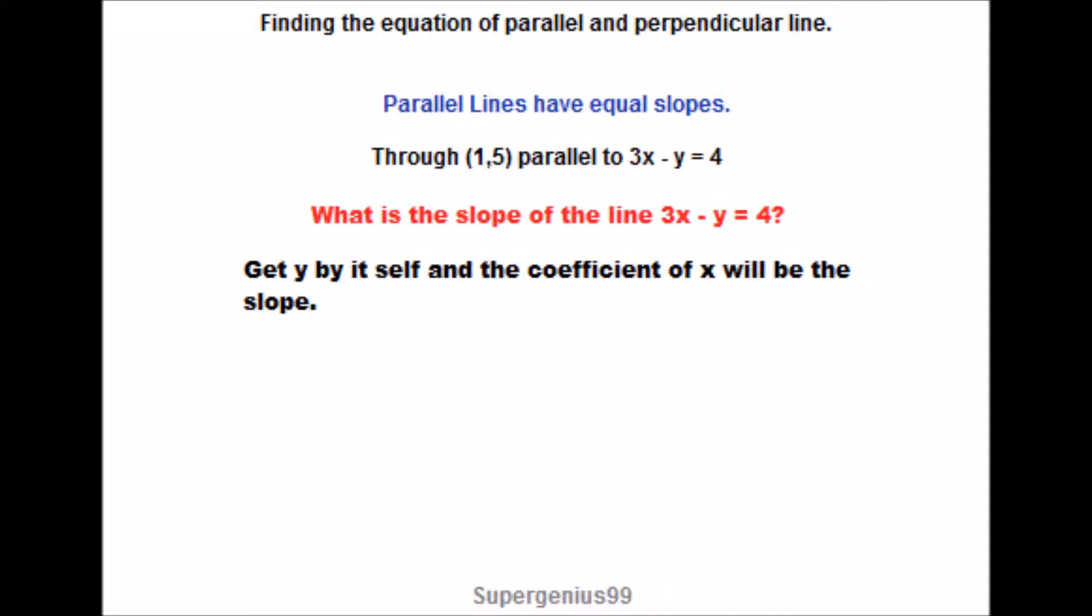One way is to get y by itself and the coefficient of x will be that slope. And this is formally called the slope-intercept form. And you will see it written as y equals mx plus b.